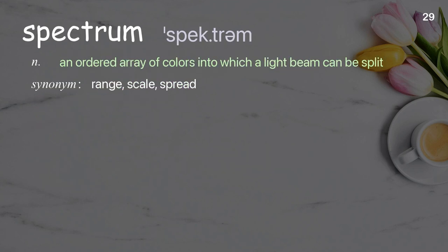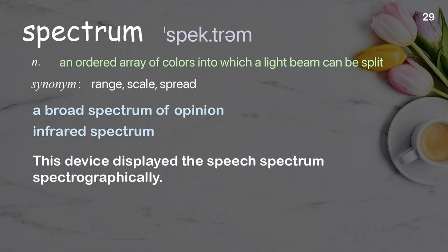Spectrum: an ordered array of colors into which a light beam can be split. Examples: a broad spectrum of opinion, infrared spectrum. This device displayed the speech spectrum spectrographically.